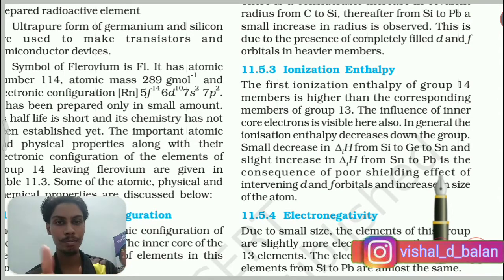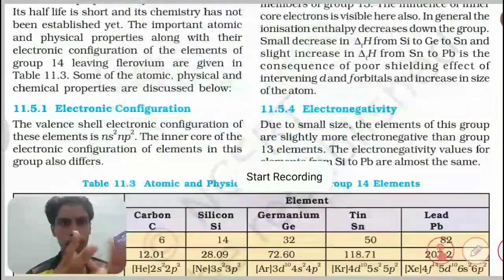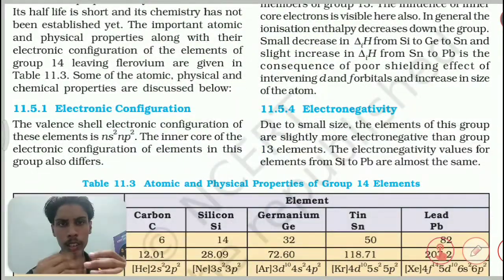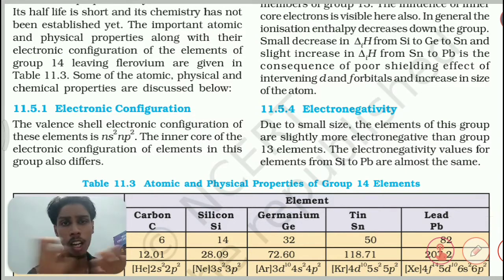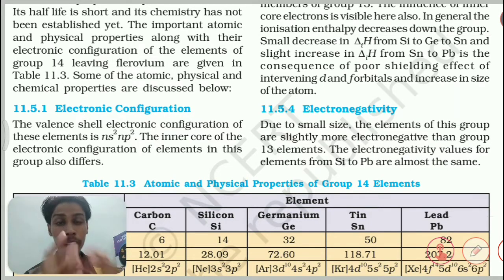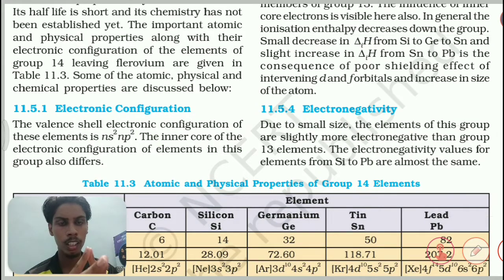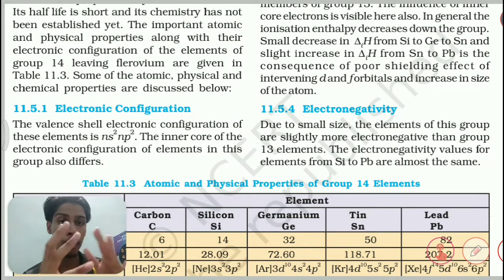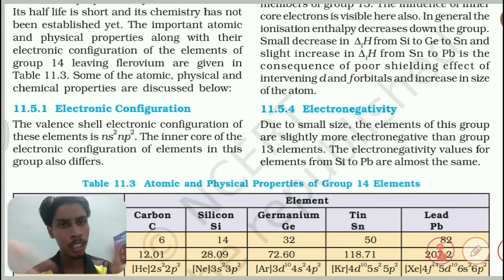Let's talk about electronegativity. Electronegativity is the tendency of an atom to attract electrons. It is inversely related to atomic size — as size decreases, electronegativity increases. Down the group in carbon's case, electronegativity decreases.